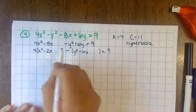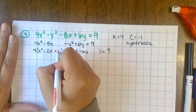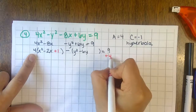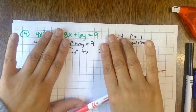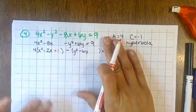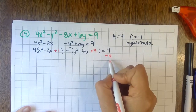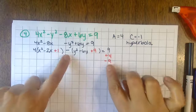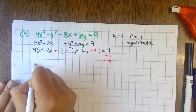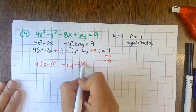Complete the square for x: half of negative two is negative one, negative one squared is one — add one inside, which means adding four to the other side. Complete the square for y: half of negative six is negative three, negative three squared is nine — add nine inside, but since it's factored with a negative, you're adding negative nine to the other side. Rewrite: four times x minus one squared minus y minus three squared.